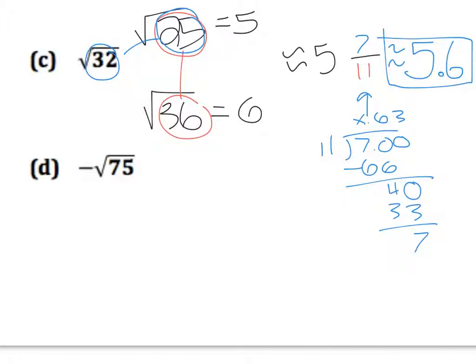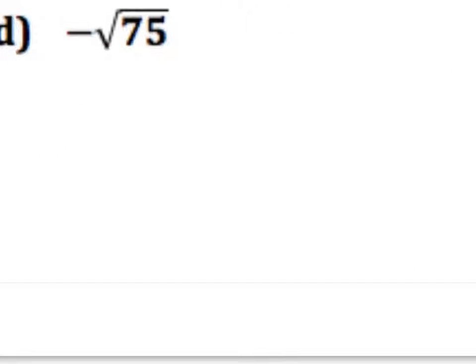For D, then, you're estimating the negative square root of 75. Think about those perfect squares. The closest perfect square that's less than the square root of 75 would be 64, and greater than 75 would be 81. But this is negative square roots of 75, so it would be negative in front of both of those, which means your answer is going to fall between negative 8 and negative 9.